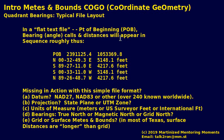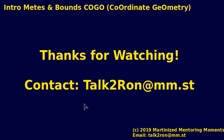To summarize: in a flat text file, the point of beginning, bearing angle calls, and distance will appear in sequence roughly as shown. Not covered here — missing in action in this simple file format — are: what is the datum (NAD 27 or NAD 83? There are over 240 known datums worldwide); what is the projection (state plane or UTM?); what are the units of measure (meters, US survey feet, or international feet — US survey feet and international feet differ by two parts in a million); bearings (true north, magnetic north, or grid north make a huge difference, especially in places like Alaska where they can differ by as much as 40 degrees); and finally, grid or surface metes and bounds (in most of Texas, surface distances are longer than grid). That's it for a quick look at metes and bounds and bearing angles. Thanks for watching.